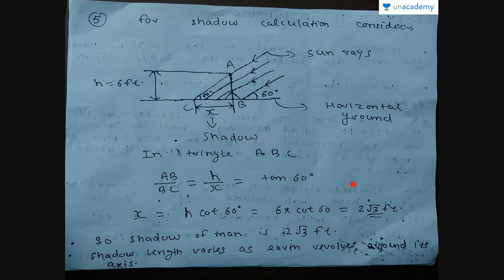The shadow length depends upon the angle made by the sun rays with the horizontal, so the shadow of the man is not constant throughout the day. As this angle changes, the shadow also changes. Shadow length varies as the earth revolves around its axis — the angle between sun rays and horizontal varies, and eventually the shadow varies. We will have zero or minimum shadow at 12 pm, when the sun is directly at the top of our head.